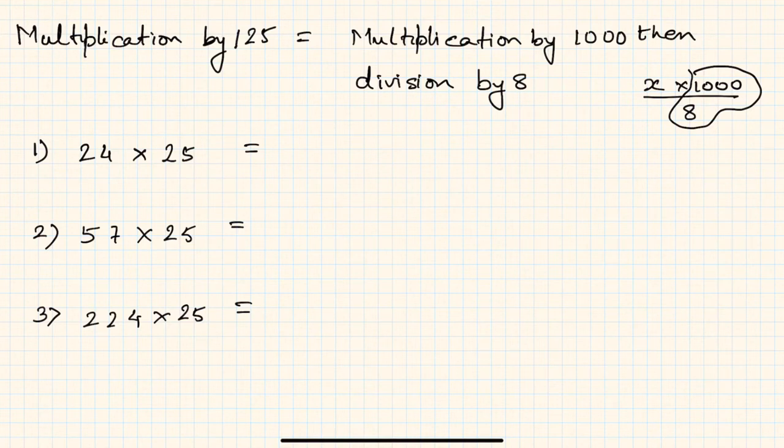The first example is 24 into 125. How do you do it? 24000 divided by 8. Now clearly 24 by 8 is 3, so the answer is 3000.